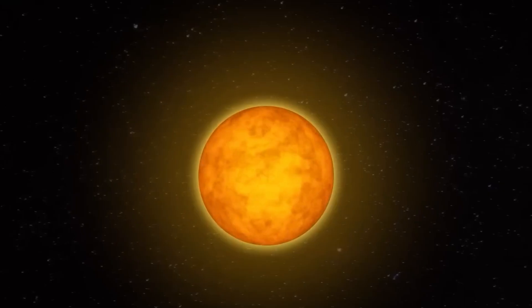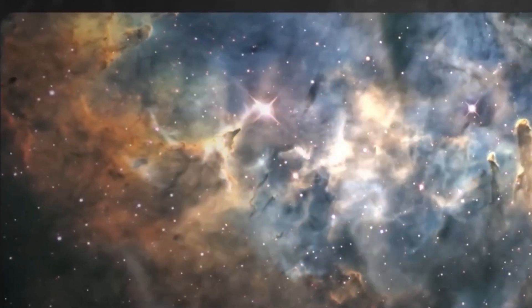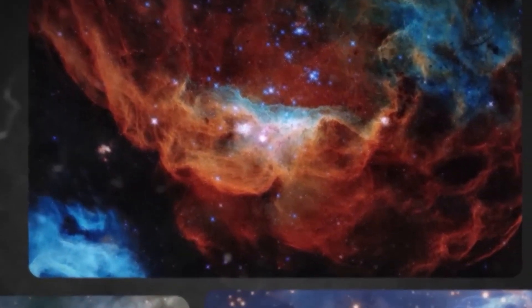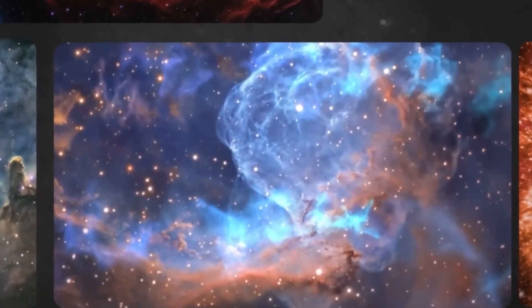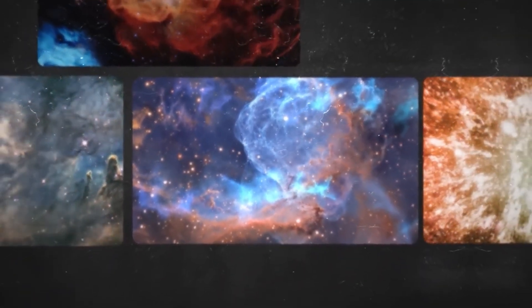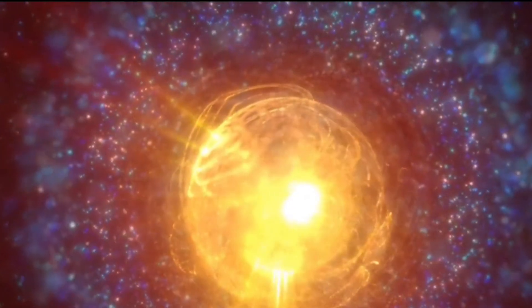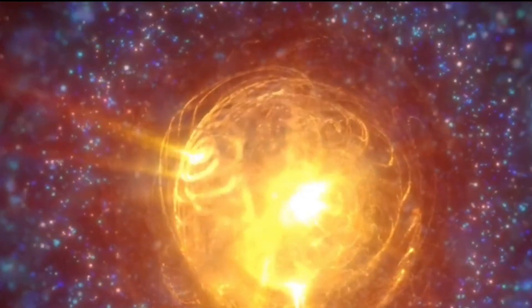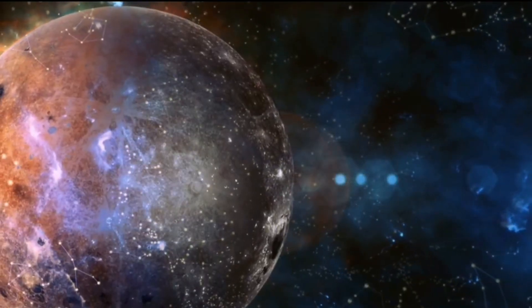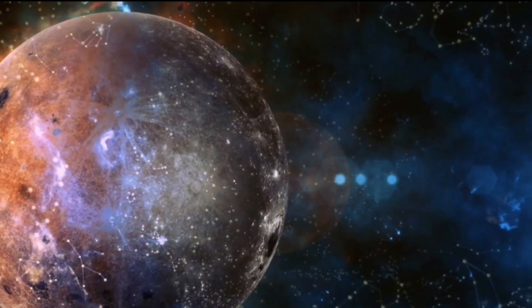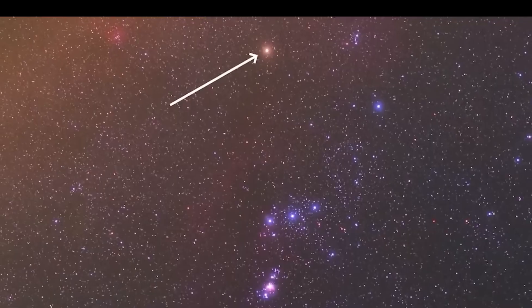This process is not unusual for red supergiants, which frequently shed their outer layers as they near the end of their life cycle. The dimming event also coincided with a temporary drop in the star's temperature, indicating that complex processes were at work in its outer atmosphere. These changes are significant because they provide insights into the star's evolving state and the dynamic processes that precede a supernova.